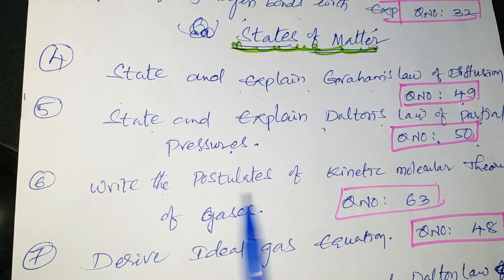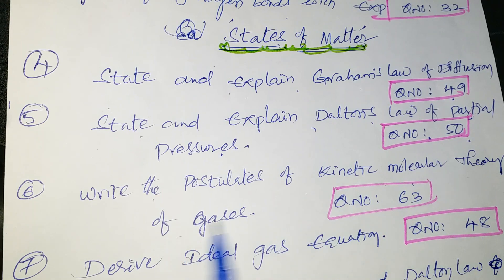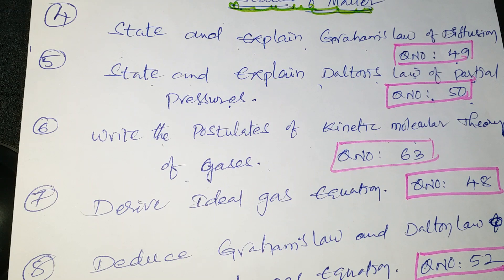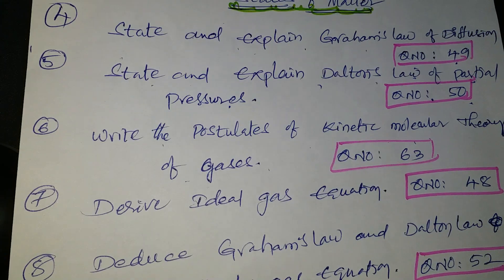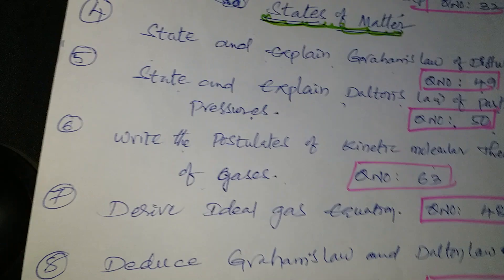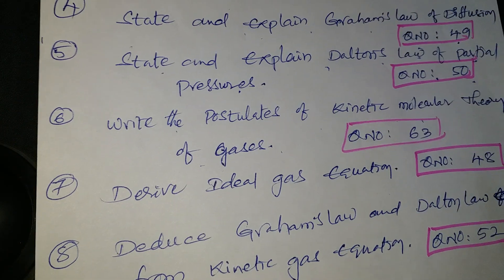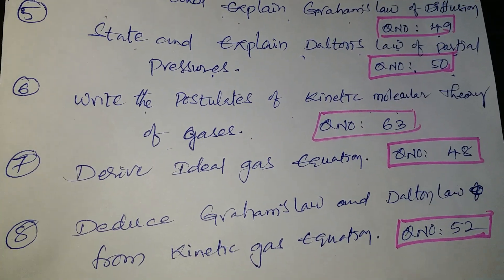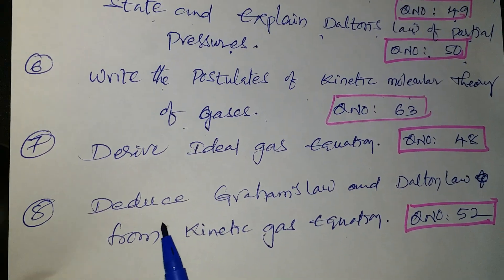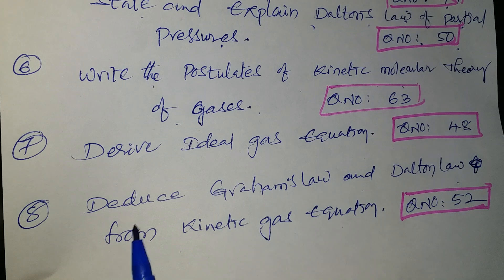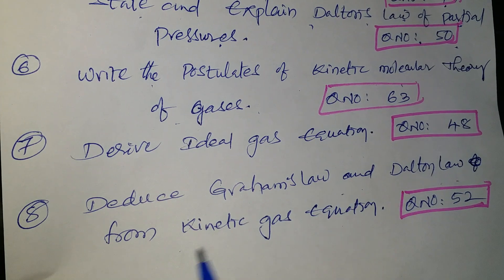Next question: write the postulates of the kinetic molecular theory of gases — question number 63. Next question: derive the ideal gas equation — question number 48. Next: deduce Graham's law and Dalton's law from the kinetic gas equation.